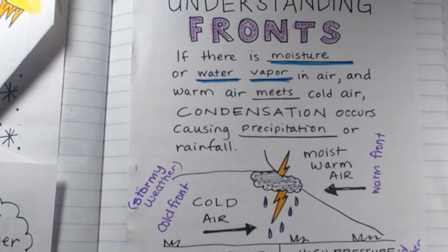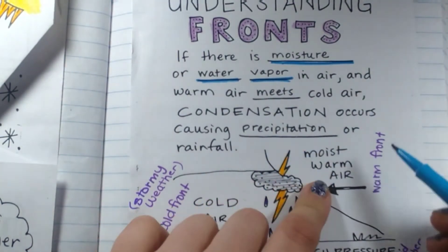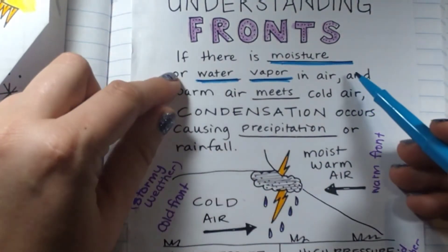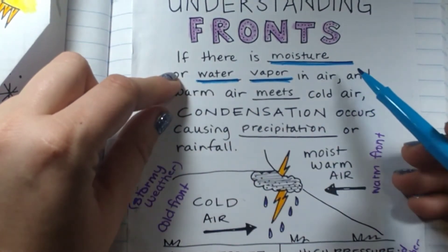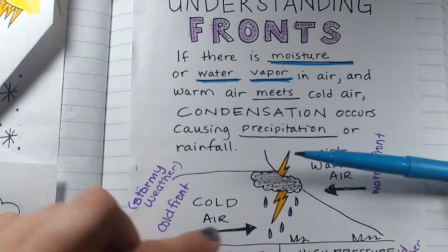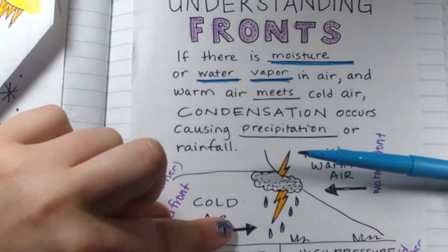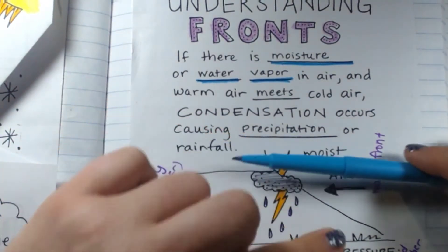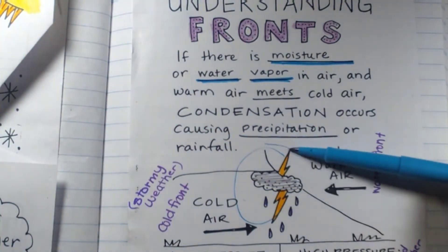This is right where a storm would happen. When we have our warm air moving into our cold air, the same thing that I talked about here. Warm air brings a warm front and cold air brings a cold front. And when they meet, that's where stormy weather happens.